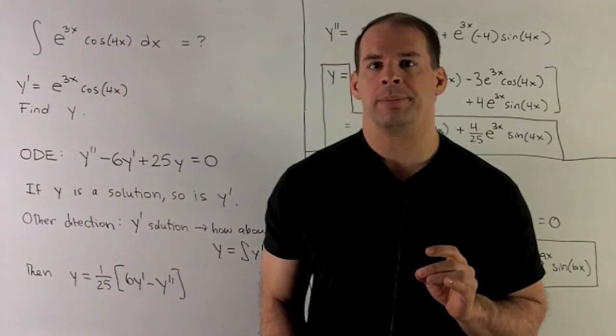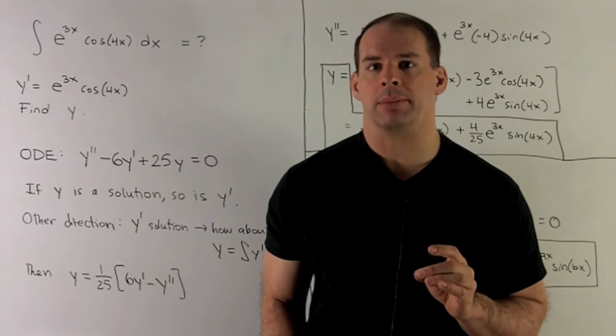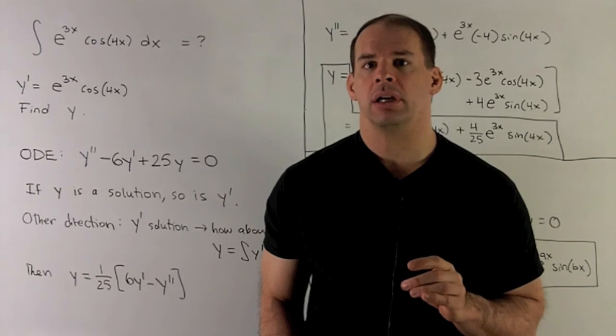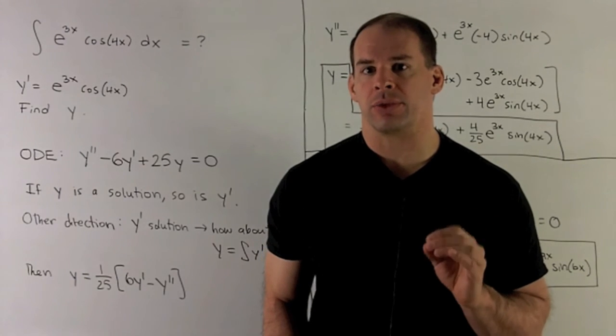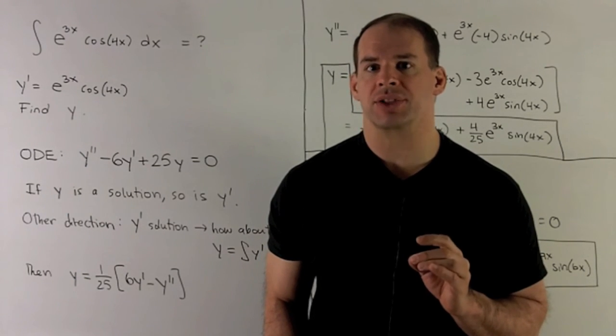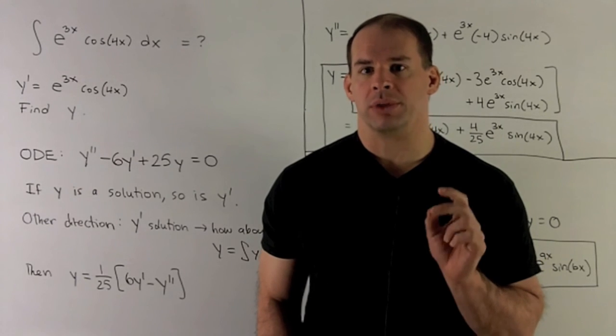Let's see how we can use an ODE to solve an antiderivative problem. So let's consider the antiderivative of e to the 3x cosine 4x. So what does this mean?